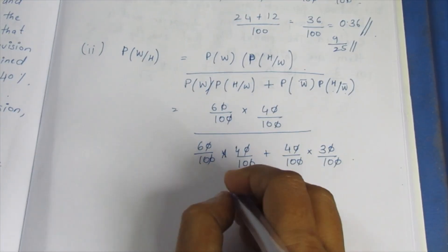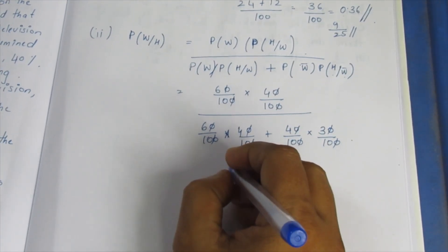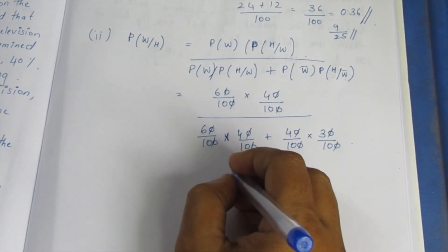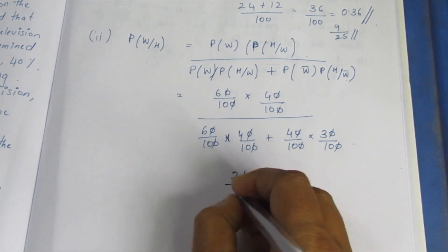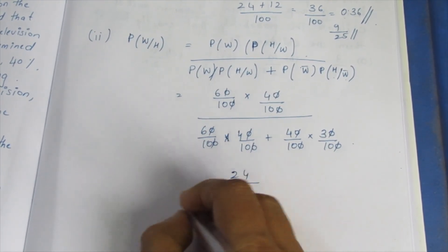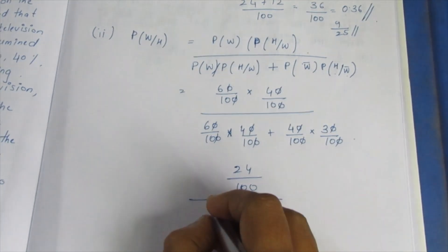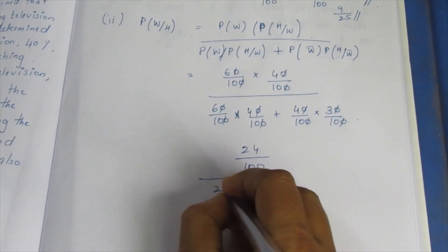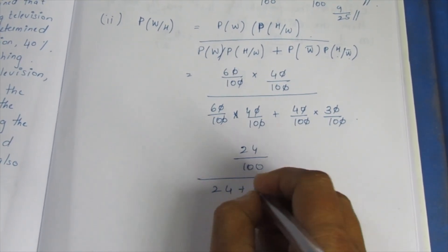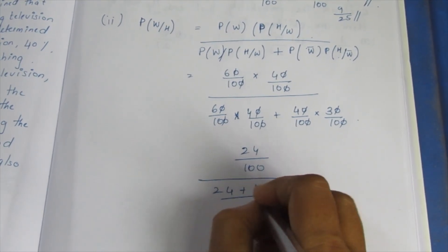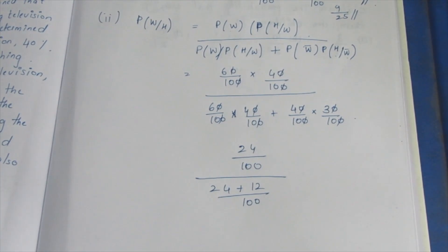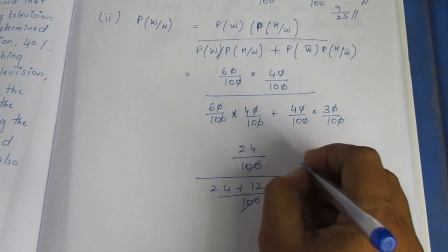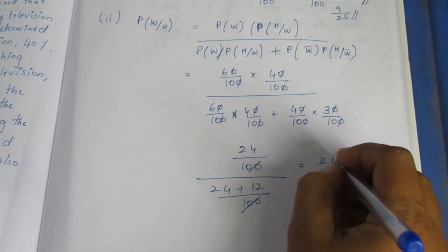The sum is 6 times 4 which is 24 by 100. Plus 4 times 3 which is 12 by 100. After cancelling, we get 36.